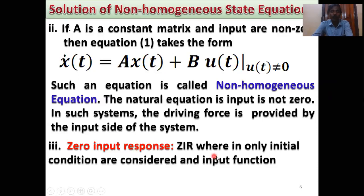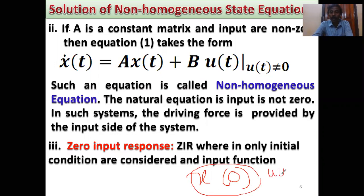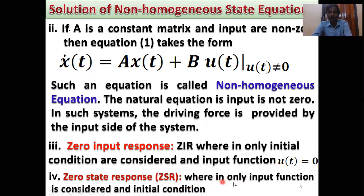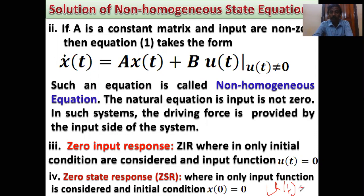Zero input response: wherein only initial conditions are considered and input function is zero. That means X(0) is considered but U(t) = 0. This is called the zero input response. Zero state response: wherein only the input function is considered. In this case, U(t) is considered but initial condition X(0) = 0. So X(0) = 0 but U(t) ≠ 0. This type of response is called the zero state response.